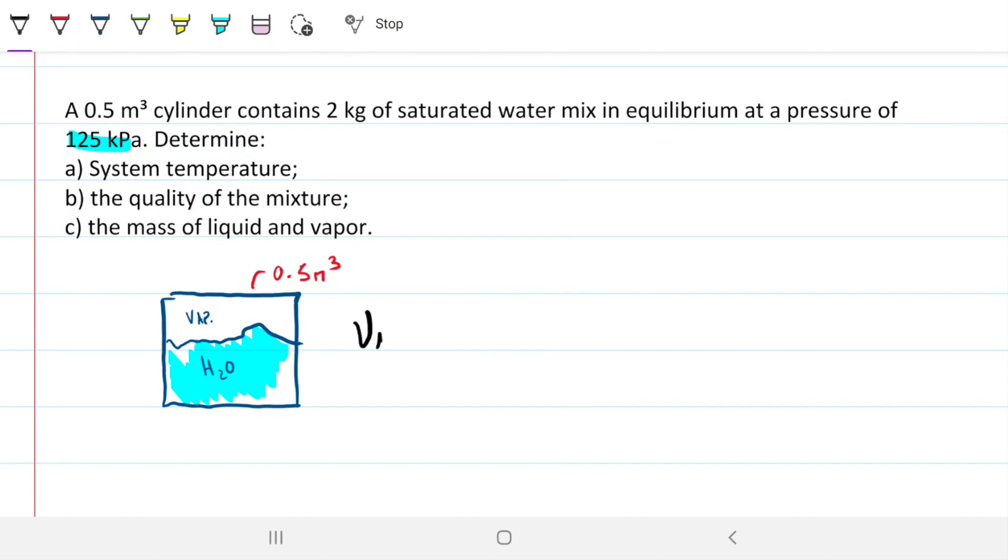Straight off the bat what we can calculate is the specific volume of this mixture, because we know that's just going to be the volume divided by the mass. So in this case here is 0.5 meters cubed divided by the 2 kg, that gives us 0.25 meters cubed per kg. Now, if that's the case, then we have two information, two state properties for this guy. The first one is the specific volume we just calculated, and the second one is the pressure, because the pressure is said to be 125 kPa. So with these two properties we can define this whole state. We can find any property we want for this state, any thermodynamic property.